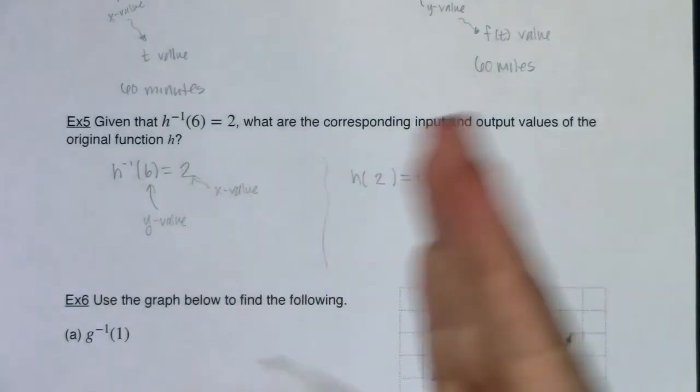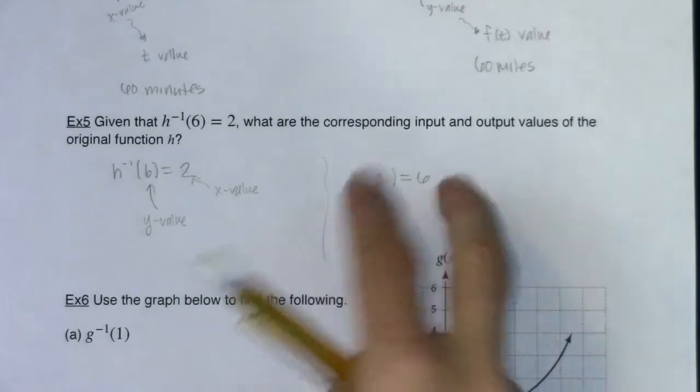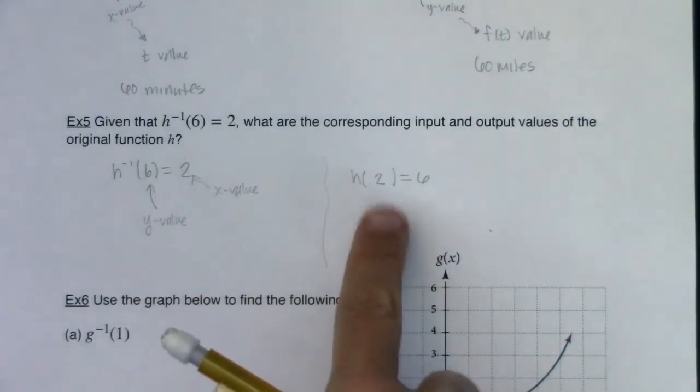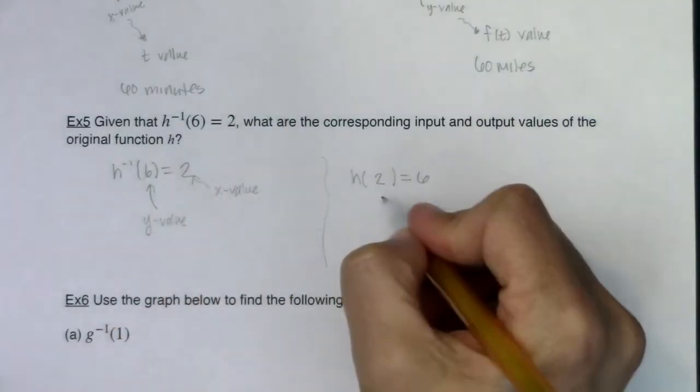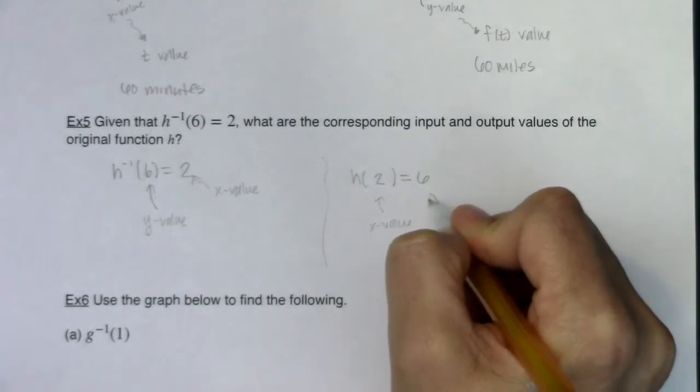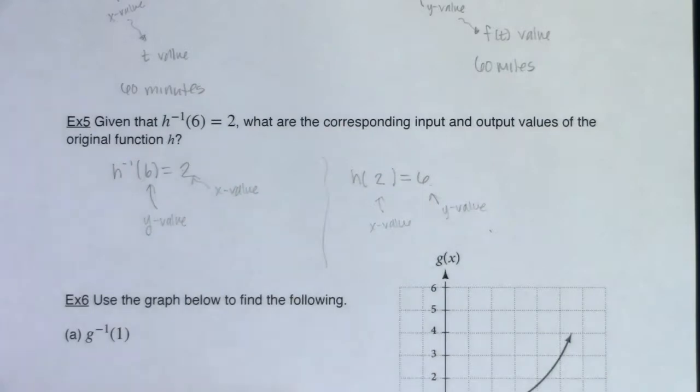All right, so this repeating theme of x's and y's switching, domains and ranges flip-flopping, that's how we can relate, or one of the ways to relate the original function to its inverse. And again, this is still an x value, and this is still a y value. They're just written in a different order because this is original function, inverse function.